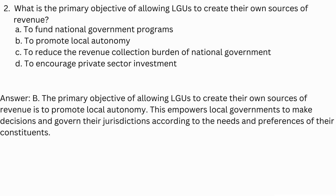Answer: Letter B. The primary objective of allowing LGUs to create their own sources of revenue is to promote local autonomy. This empowers local governments to make decisions and govern their jurisdictions according to the needs and preferences of their constituents.